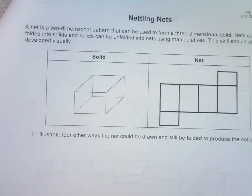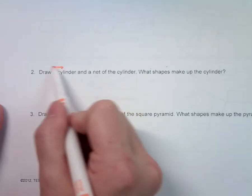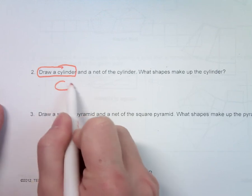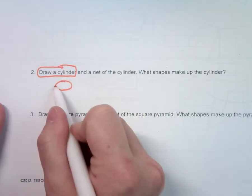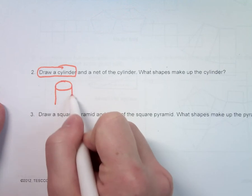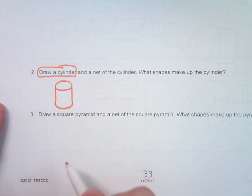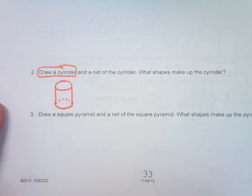Starting with number two: draw a cylinder and a net of the cylinder. I start off by drawing the cylinder — I draw a circle, kind of oval looking, then I draw my two lines down, and then I make the bottom curve. I make this one dashed, just to try to give it a little bit of a 3D effect.